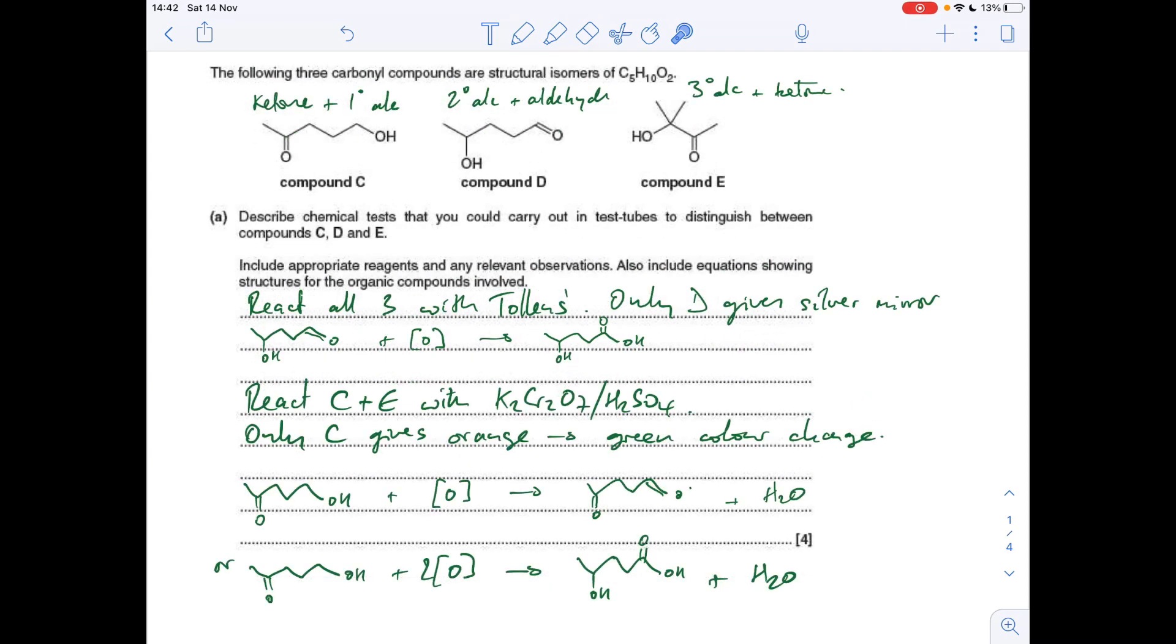E doesn't because it's a tertiary alcohol. So there it is in words and two possible equations here. You could either oxidize to the aldehyde, so you'd just need one mole of reducing agent, you get one mole of water, or you could oxidize fully to the carboxylic acid, so you'd need two moles of oxidizing agent, but you still only get one mole of water.